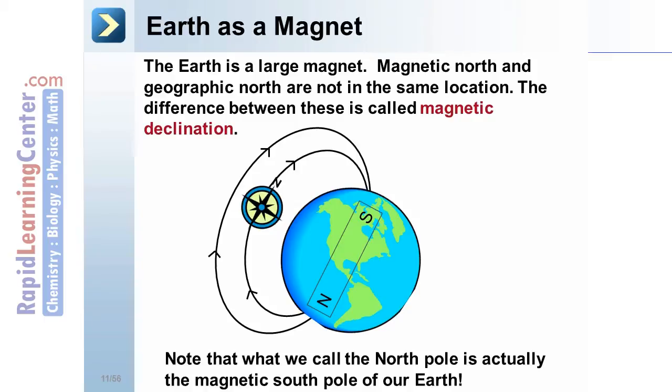Note, what we call true north pole, or the north pole on the Earth, is actually the magnetic south pole of our Earth. It's just that the north end of a compass needle points in that direction.